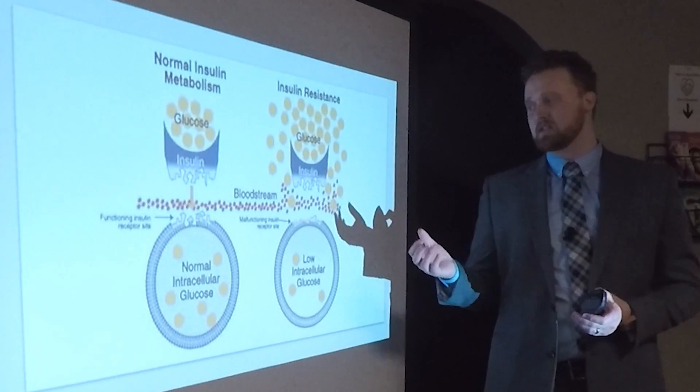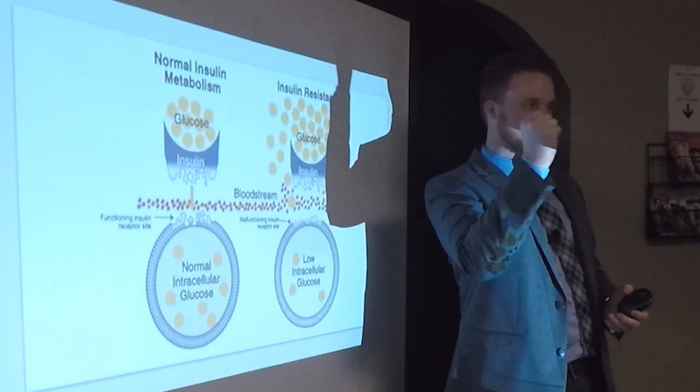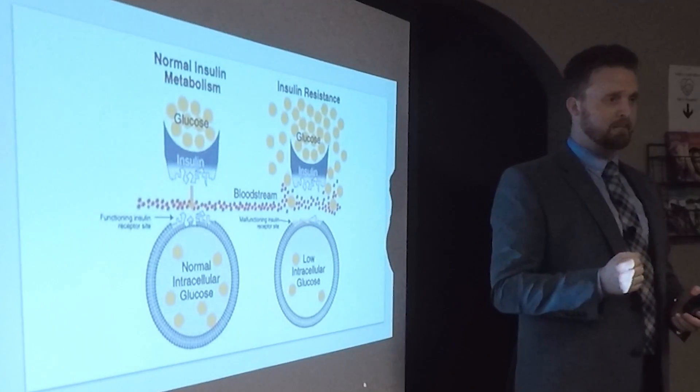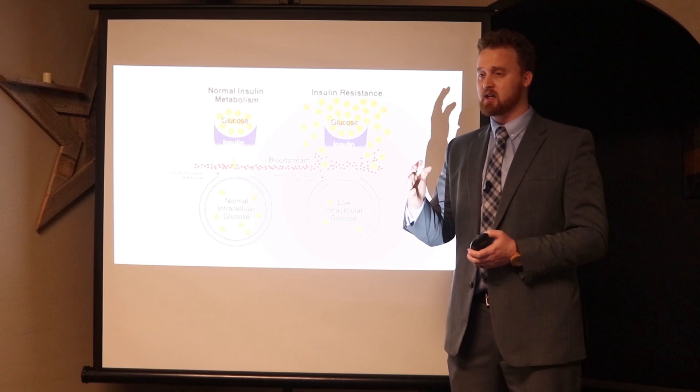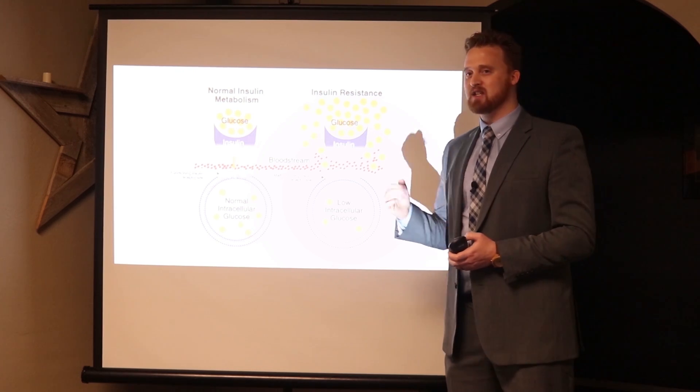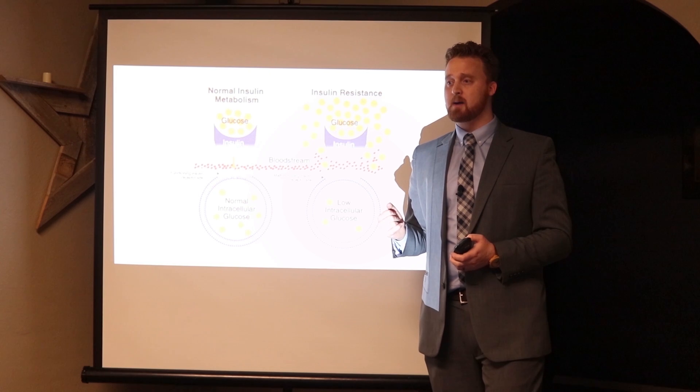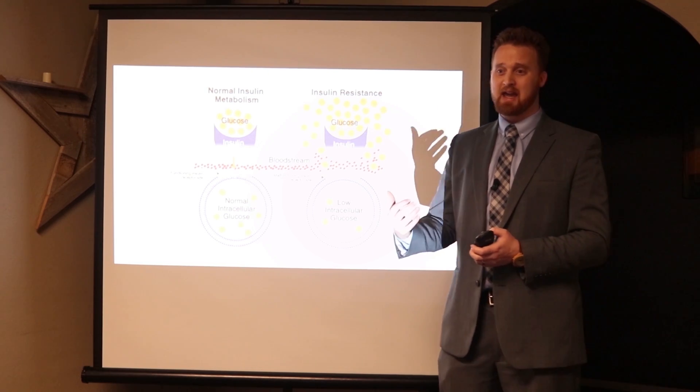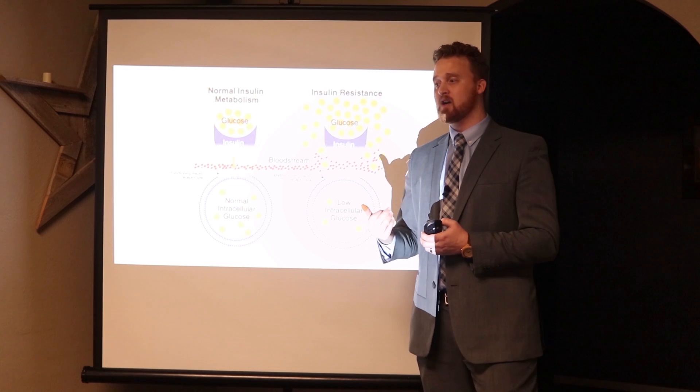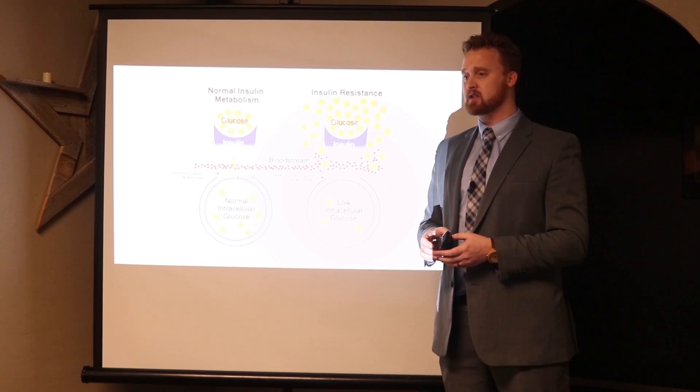What happens is, insulin's supposed to take sugar out of our bloodstream to utilize it for our body. But when the body starts producing too much insulin, the cells get resistant to it and don't carry it through. That becomes a real problem, especially for people who get central obesity or weight gain, having issues and not understanding why they can't lose weight. A lot of times it has to do with insulin resistance.